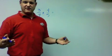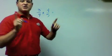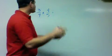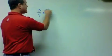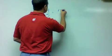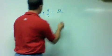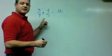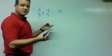When multiplying fractions, we multiply straight across. Three times four is twelve. Four times five is twenty.